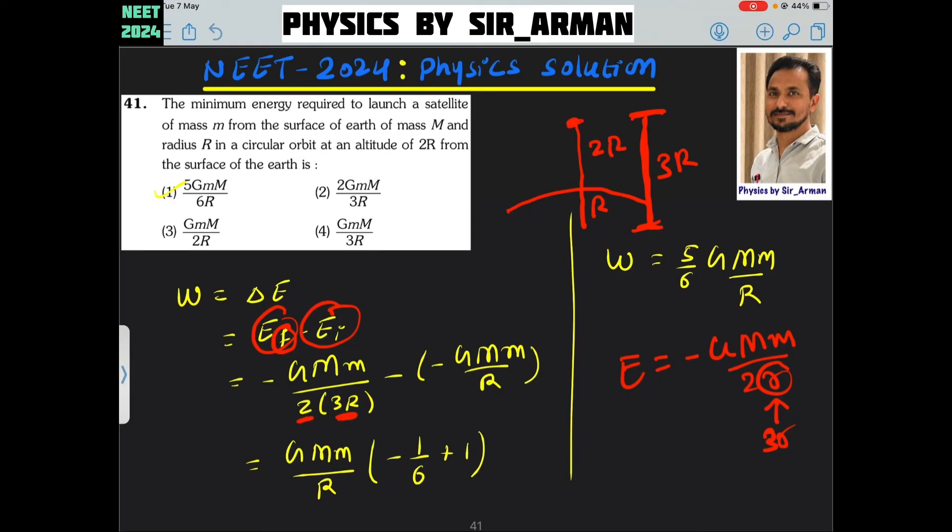It becomes 6R. And initially it is lying on the surface of earth, so height from the surface of earth is just R. So it is GMm by R.